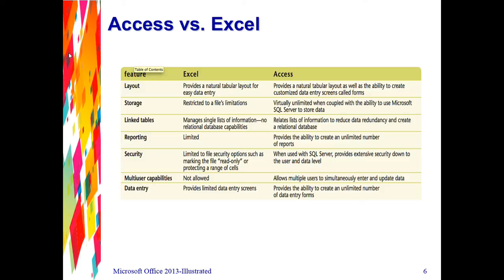As far as reporting goes, in Excel there's very limited reporting — you can use charts and graphs. But in Access, there is an unlimited number of reports you can create, so whatever information you want, you can make a report for it. With security, Excel has limited file security options — you can mark it as read-only or protect a certain range of cells. With Access, using it with an SQL server provides extensive security down to the user and data level, meaning you can encrypt it, put passwords on it, and only the people who need to see certain areas will be able to.